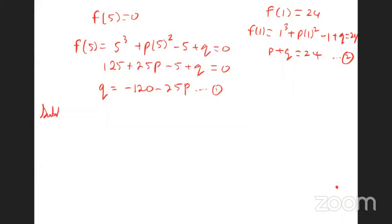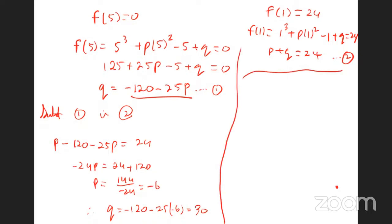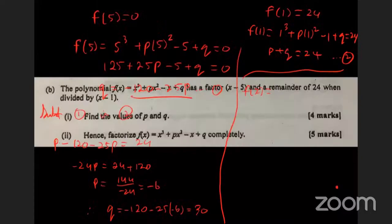Now solve simultaneously. Substitute equation one into equation two: p + (-120 - 25p) = 24. So -24p = 144, giving p = -6. Then substitute back: q = -120 - 25(-6) = -120 + 150 = 30. So f(x) = x³ - 6x² - x + 30.